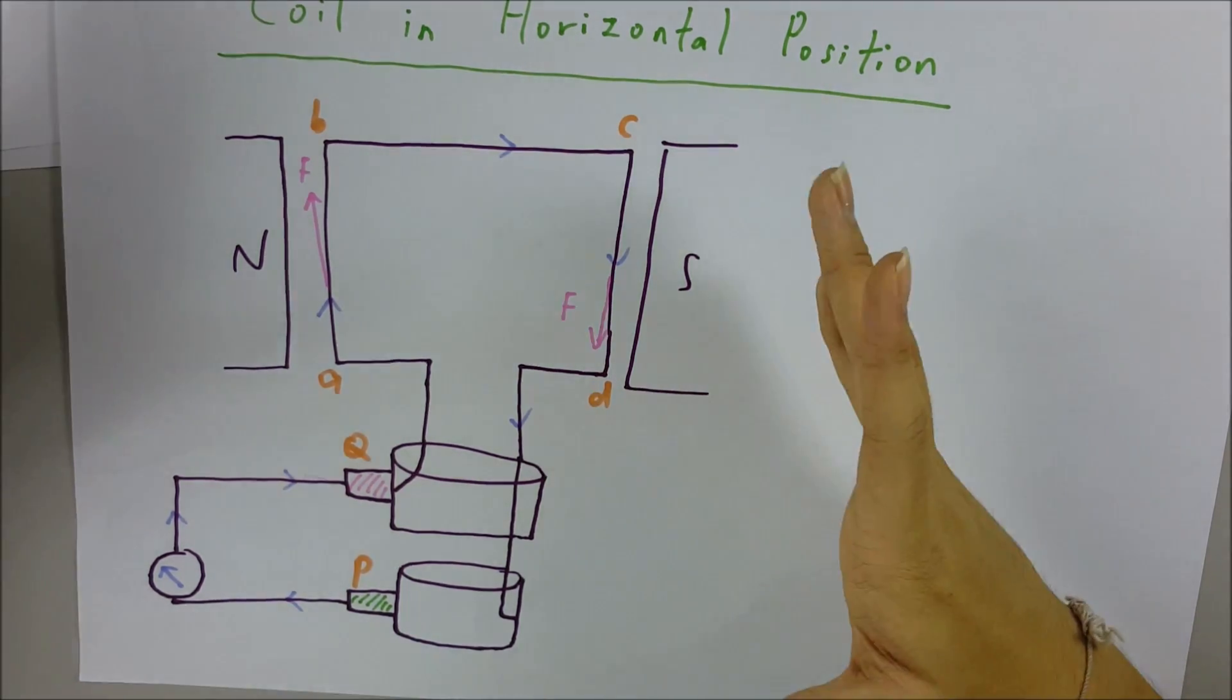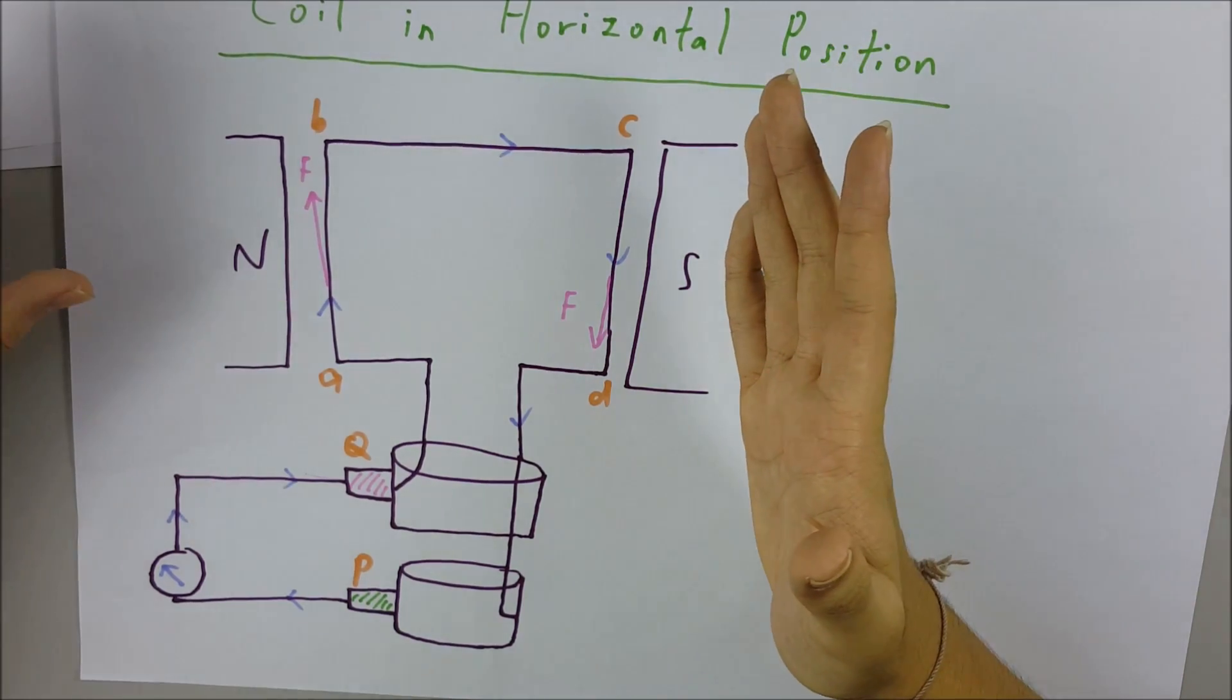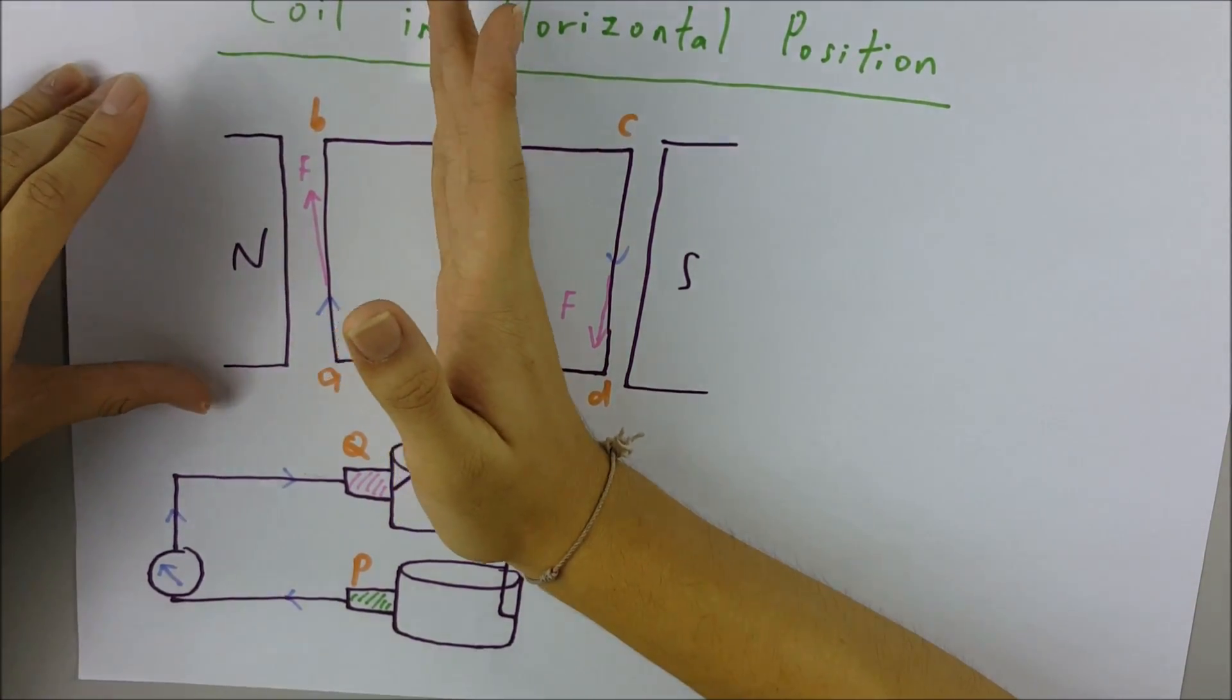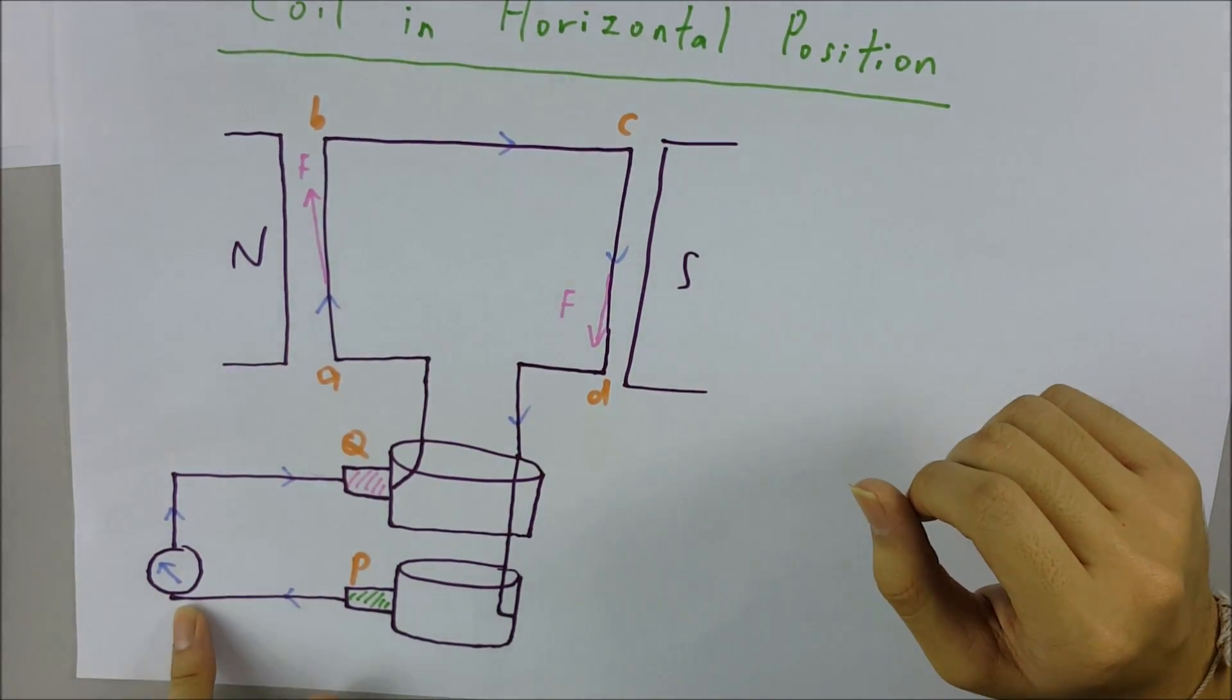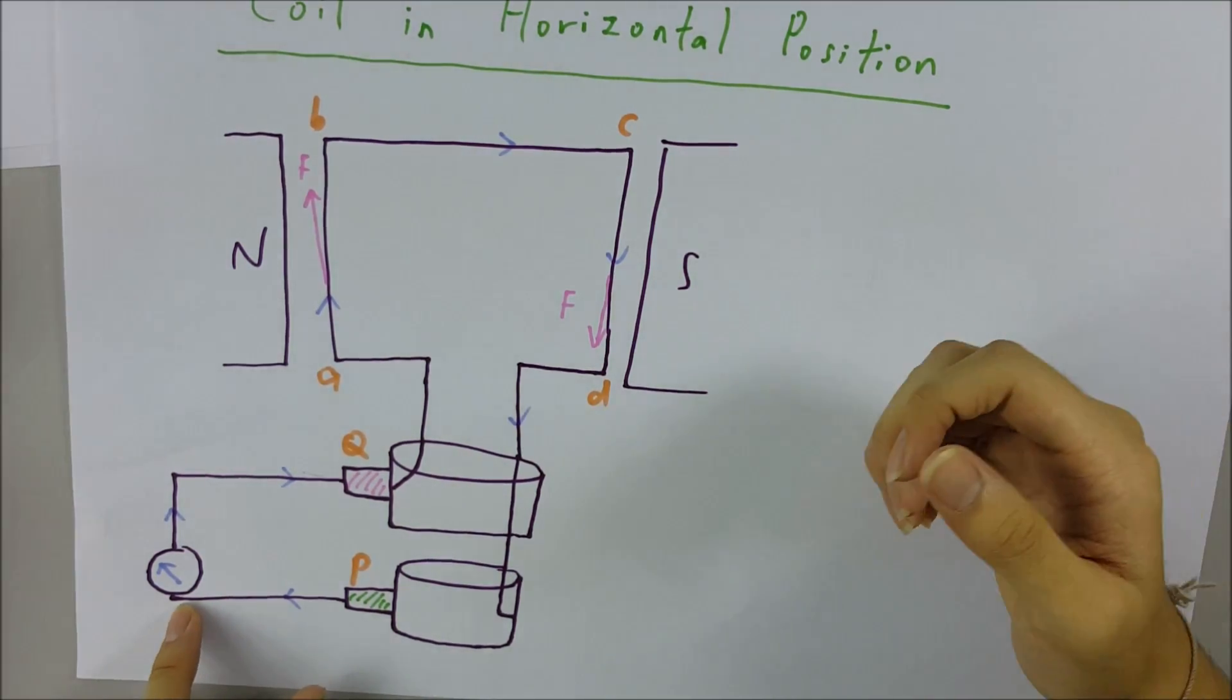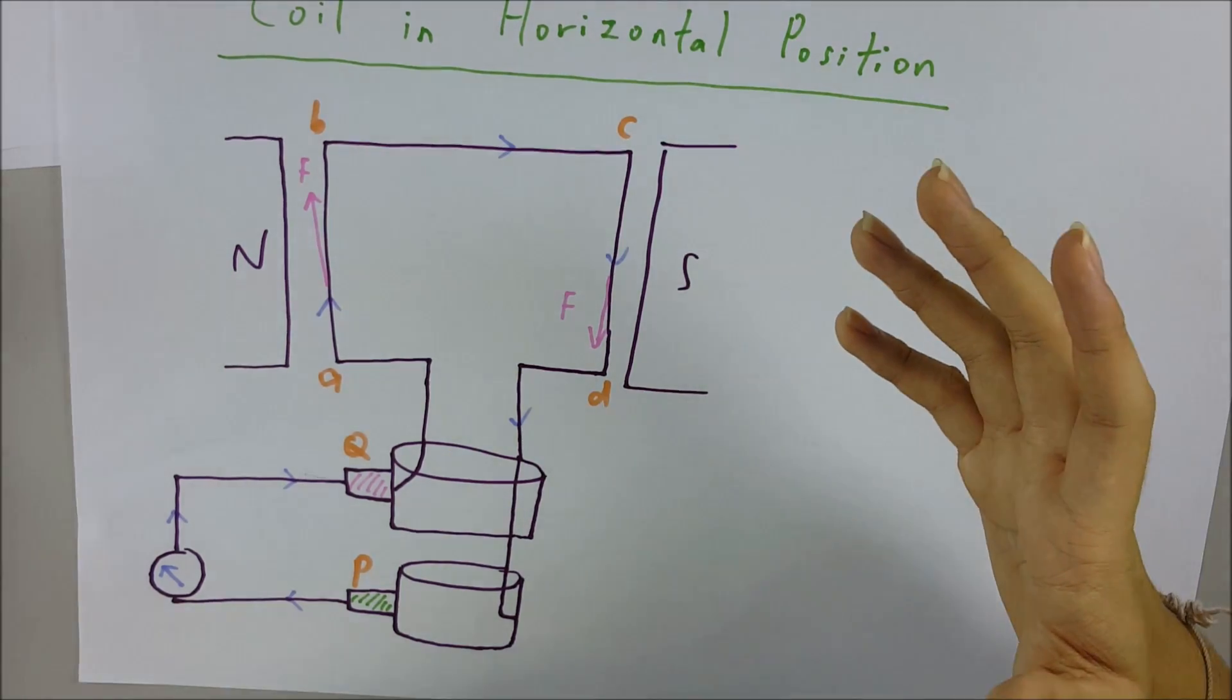No induced current is produced because there is no cutting of the field lines, as the coil is parallel to the magnetic field lines, and the galvanometer will return to the zero mark. After this position, the current increases again as it moves back to the horizontal position.